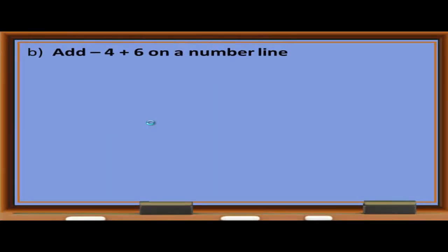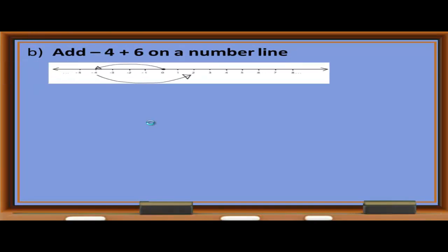Example B: Add (negative 4) + 6 on a number line. First we move from right to left 4 units — that is 1, 2, 3, 4. Then we move from left to right 6 units — 1, 2, 3, 4, 5, 6. Therefore, negative 4 + 6 = 2.